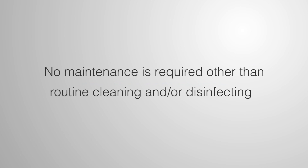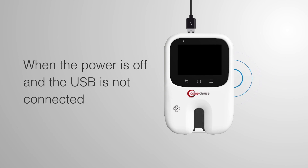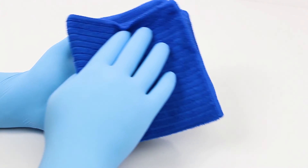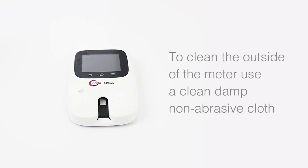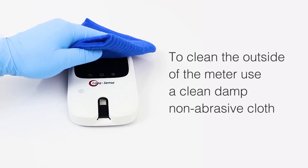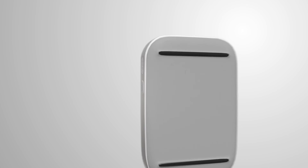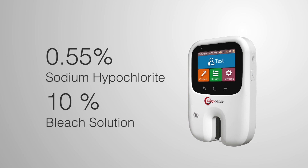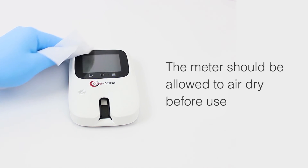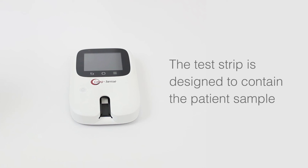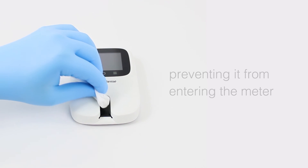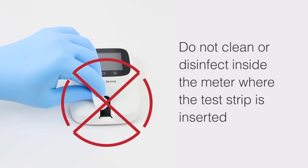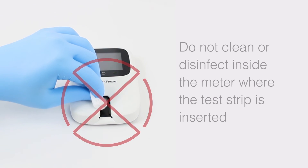No maintenance is required other than routine cleaning and/or disinfecting. When the power is off and the USB cable is not connected, the meter housing can be cleaned and disinfected. To clean the outside of the meter, use a clean, damp, non-abrasive cloth. The meter can be disinfected using any germicidal wipes that have 0.55% sodium hypochlorite or 10% bleach solution with a 1-minute contact time. The meter should be allowed to air dry before use. Do not clean or disinfect inside the meter where the test strip is inserted, as cleaning this area should be avoided.